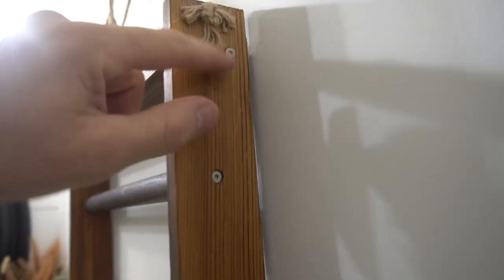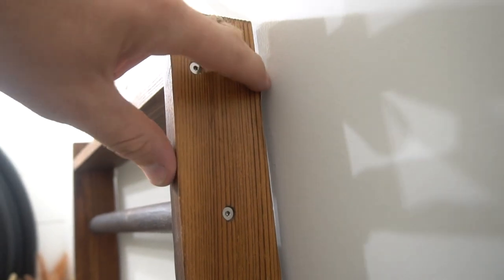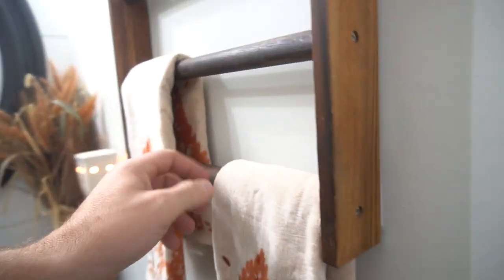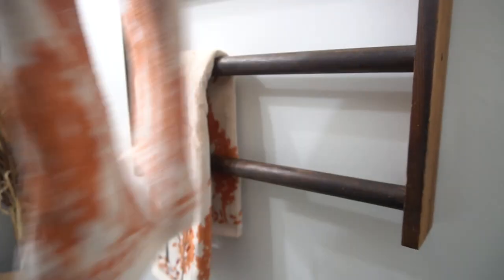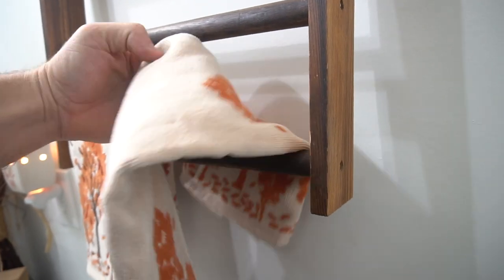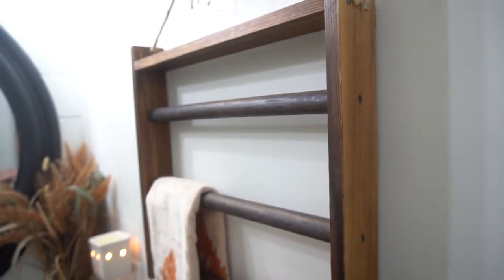Back here behind, it's got some hooks where you attach it to the wall with screws. You can also do that down here, but in this case, we just left it loose so it can pull away from the wall a little bit when you put your towel back on there.